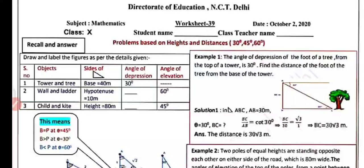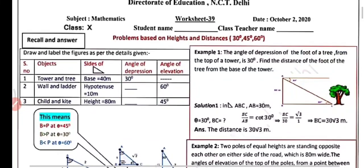Hi everyone, welcome to my YouTube channel NCRT MathHub. Today in this video we will do worksheet number 39 for class 10, subject mathematics. We will do some problems based on heights and distances, especially for the angles 30°, 45°, and 60°. Let's begin and try to recall and answer.